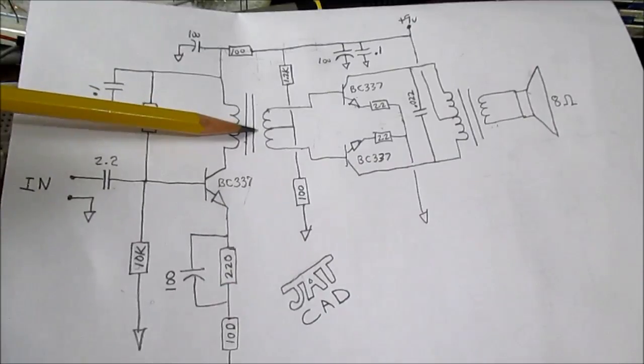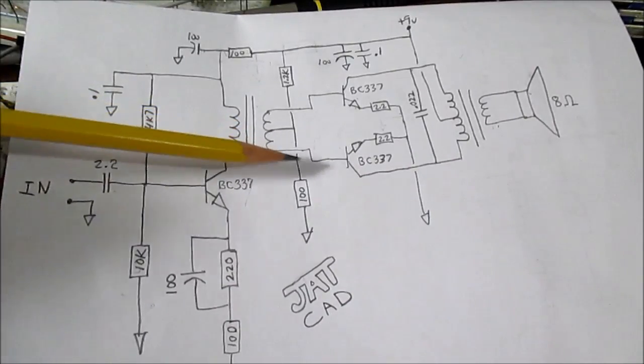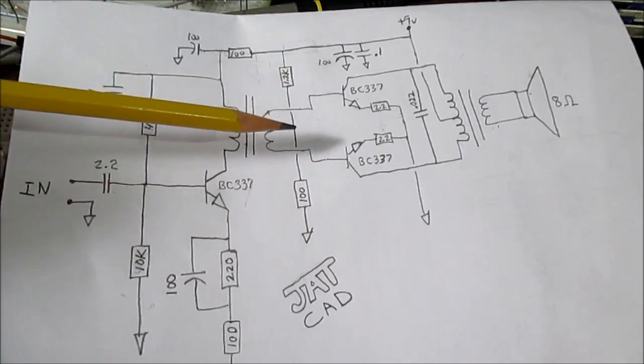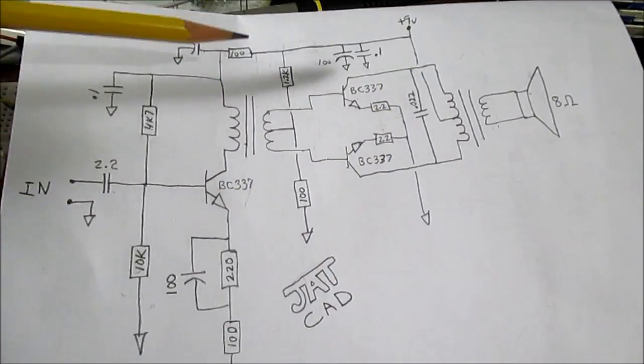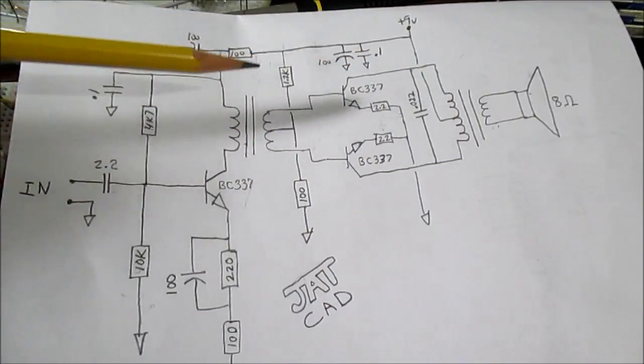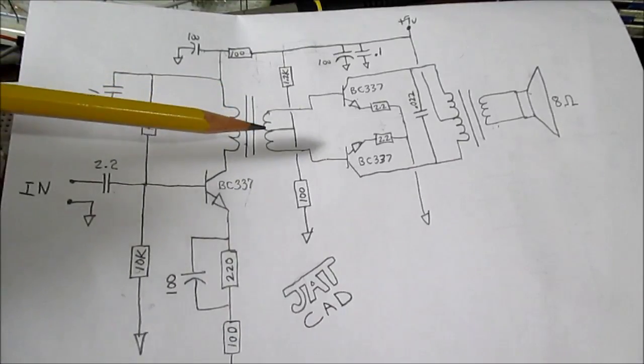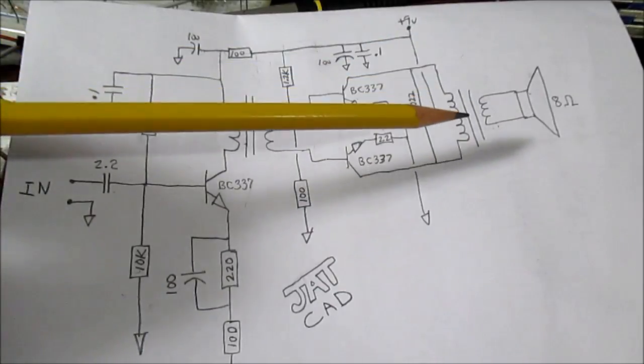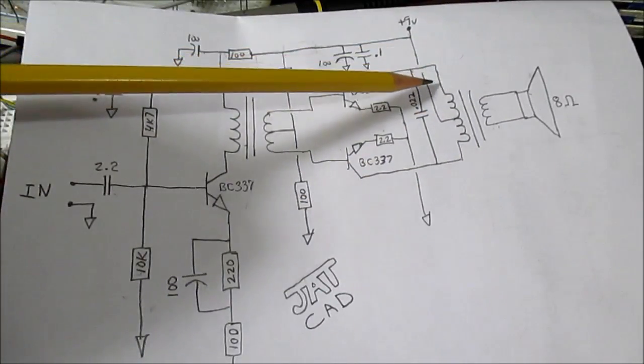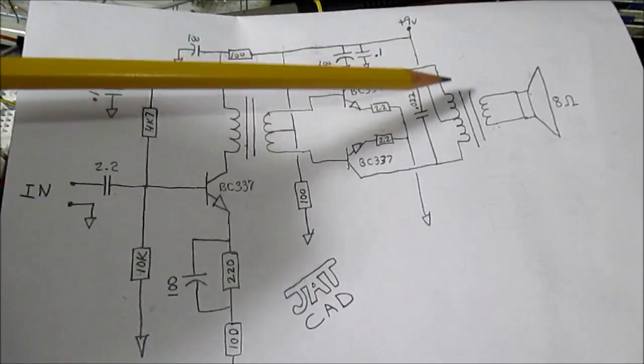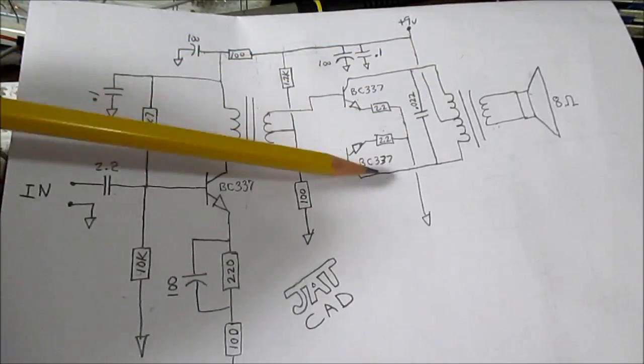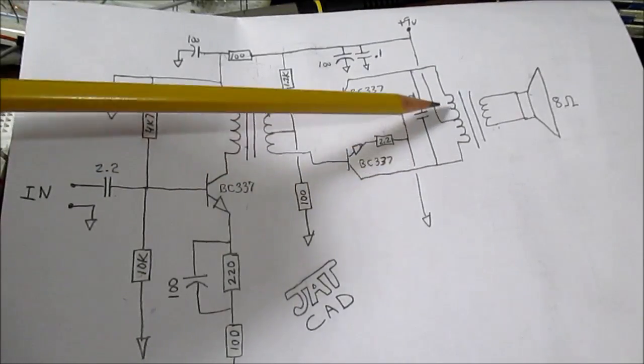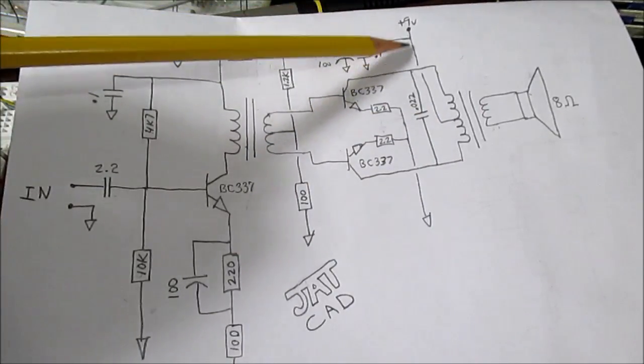And the other important feature of this transformer is to invert the signal going to the base of these transistors. One transistor is going to handle the positive side, the other transistor is going to handle the negative side of the signal, because it's a push-pull type design. Think of it as one transistor pushing, the other transistor pulling. The collectors of the output transistors - one side goes to one end of the output transformer, the other collector goes to the other end of the output transformer. The center goes to the positive rail.